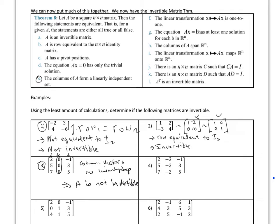A is not invertible. You also could say that the columns of A don't span Rⁿ, so A is not invertible as well.